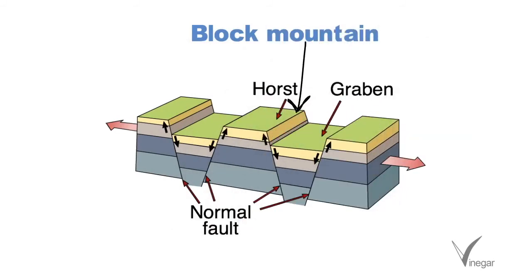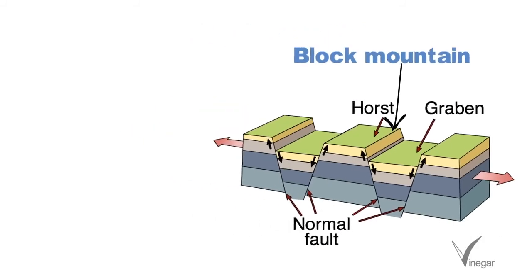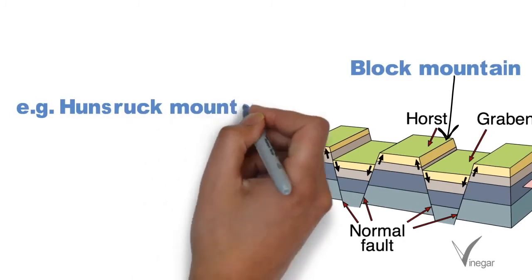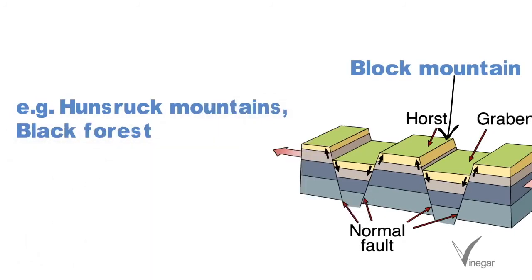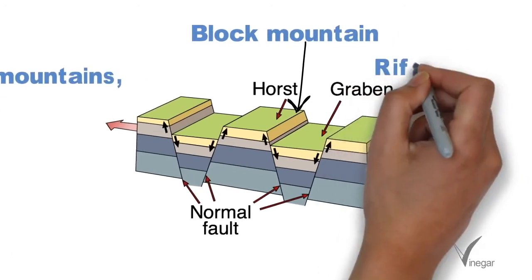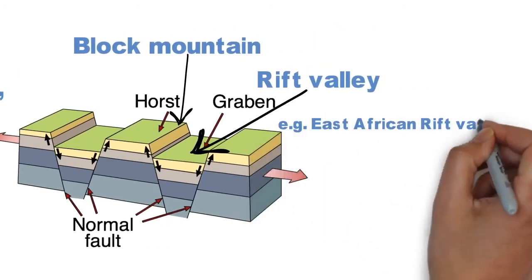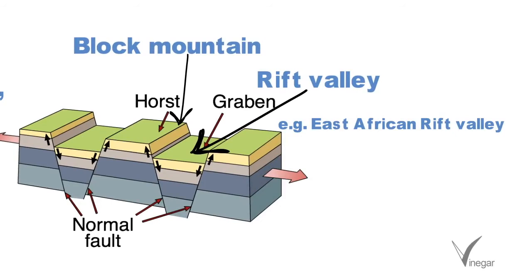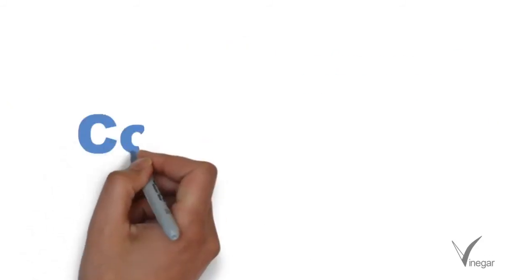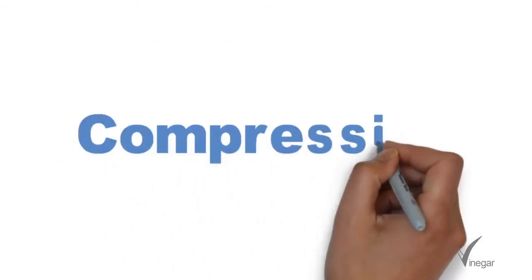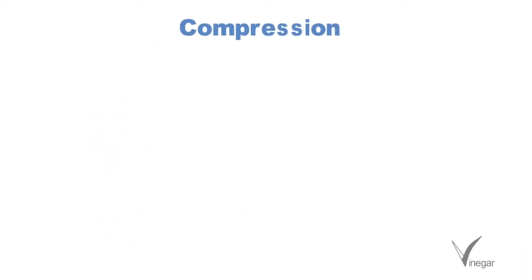The portion which is left behind is known as a block mountain. The faulted edges are very steep and the top is almost flat. Hunsrück Mountains and Black Forest are examples of such mountains. Sometimes a rift valley is also developed — its example is the East African Rift Valley, which is around 3,000 miles long, located in East Africa, and extends from the Red Sea to Syria.